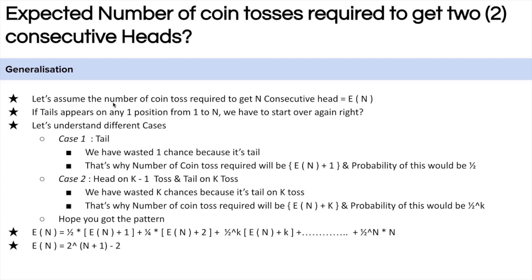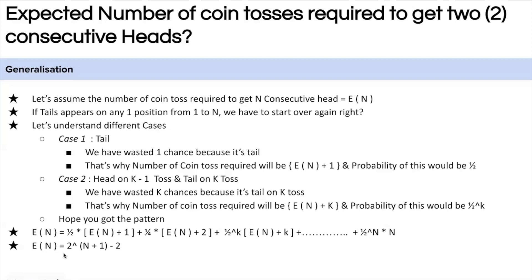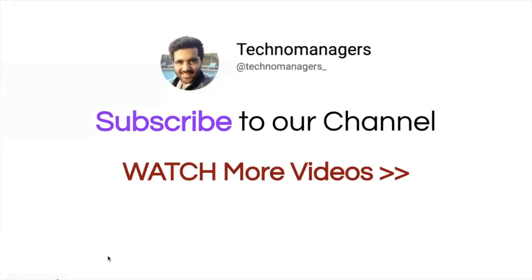Let's think about the generalized solution. If you want n consecutive heads and a tail comes at the kth position (where k is less than n), you have wasted k trials and must start again. The general equation is: E(n) = (1/2)(E(n) + 1) + sum over k from 1 to n-1 of (1/2)^k × (E(n) + k) + (1/2)^n × n. Solving this generalization gives E(n) = 2^(n+1) − 2.